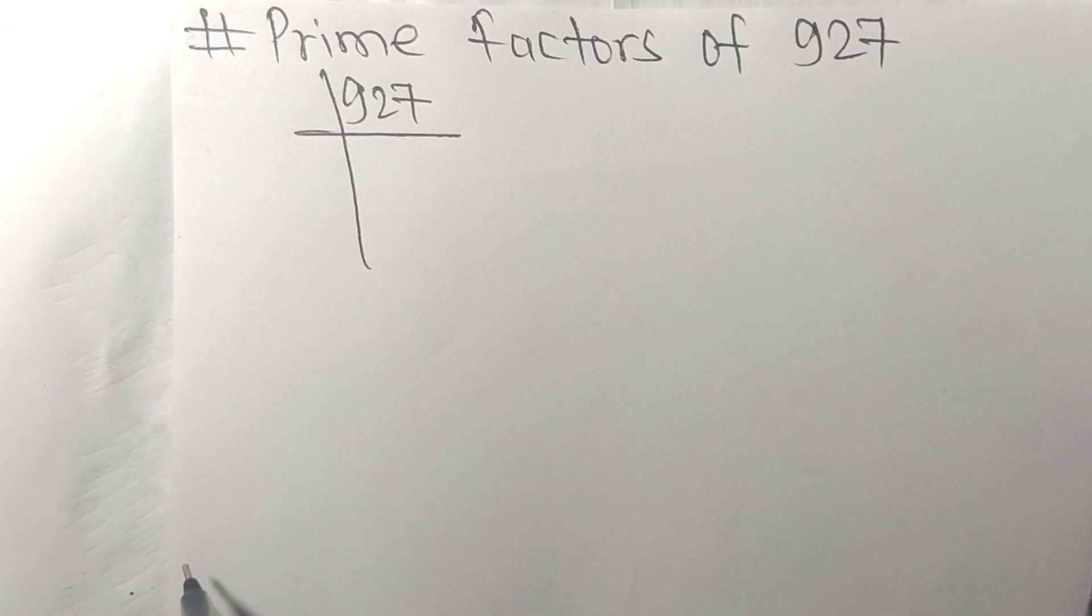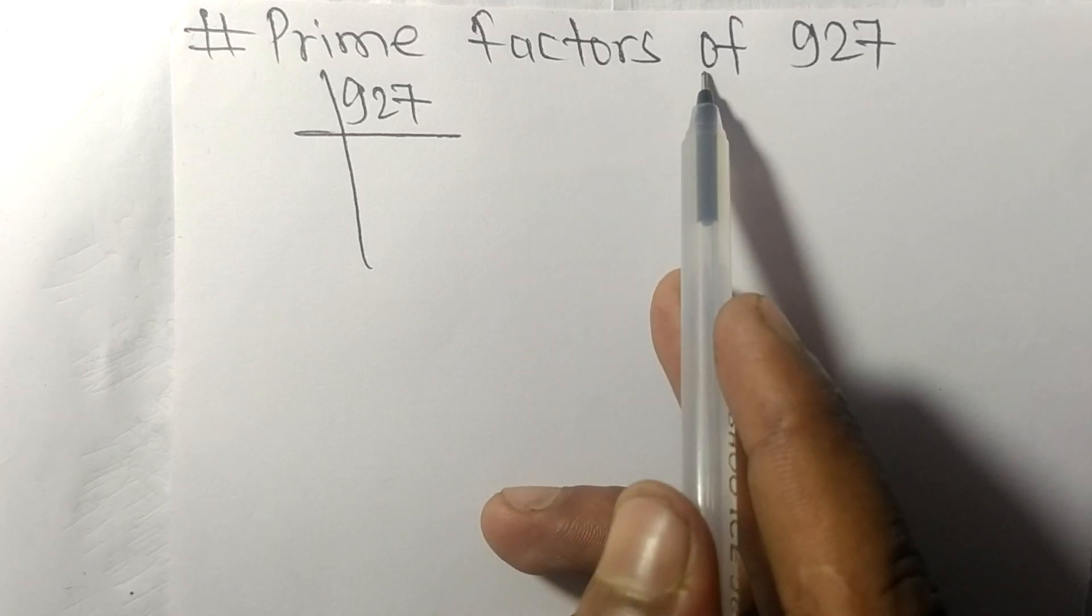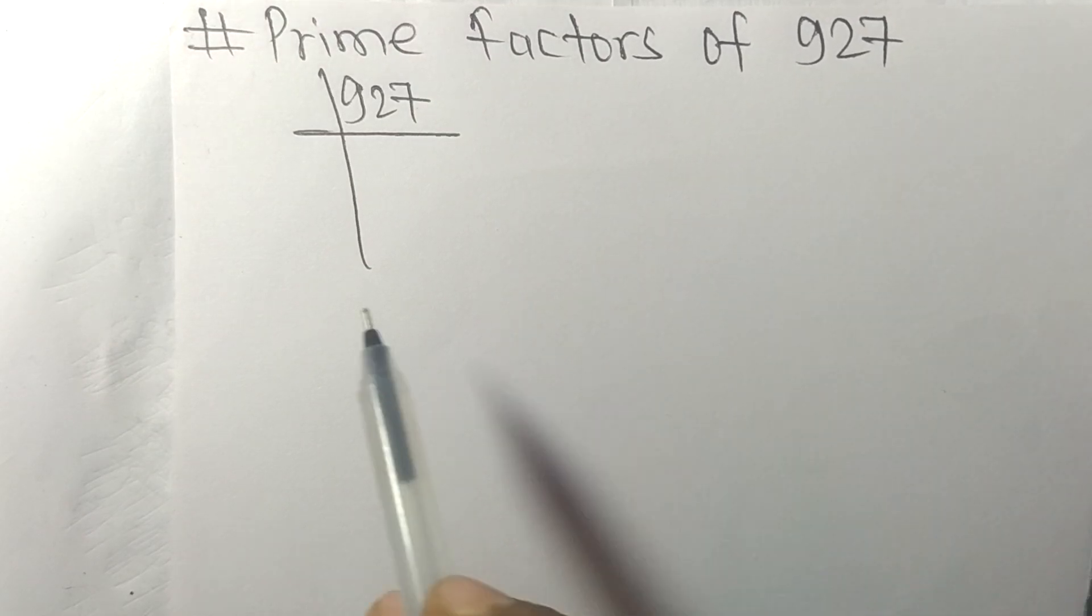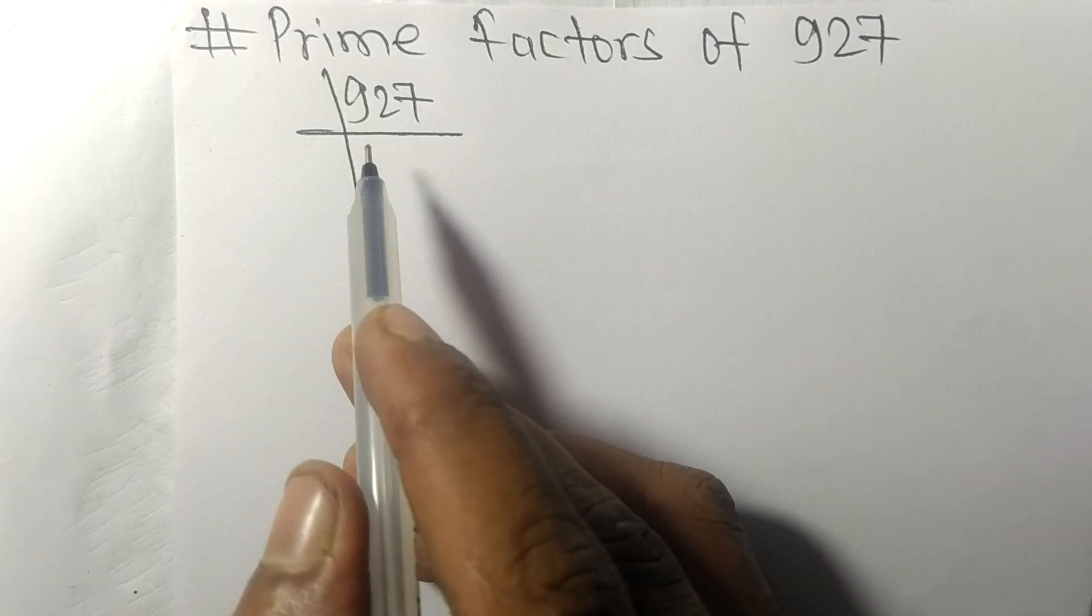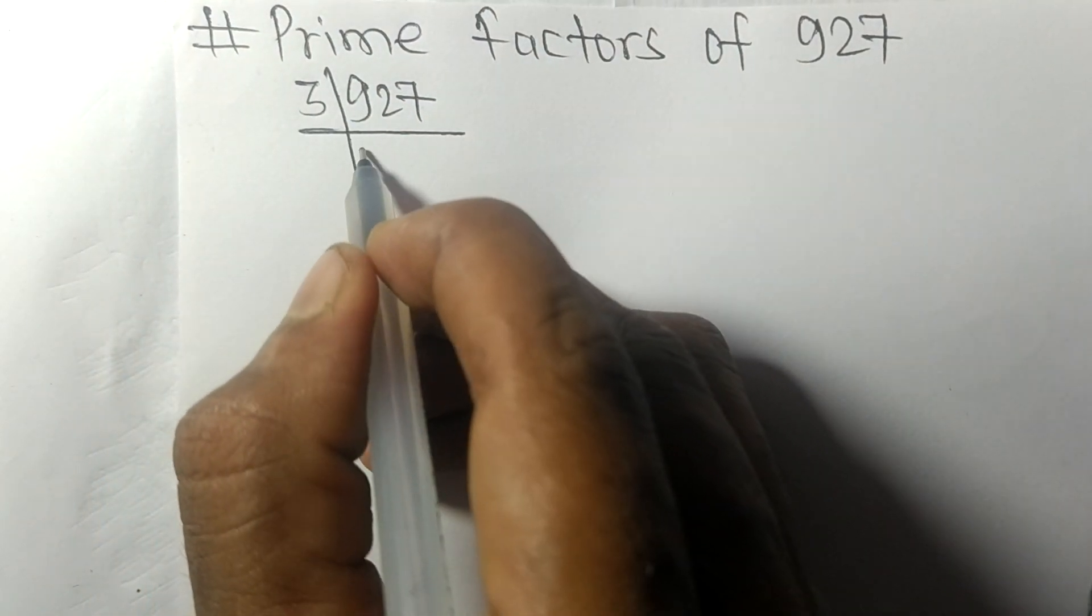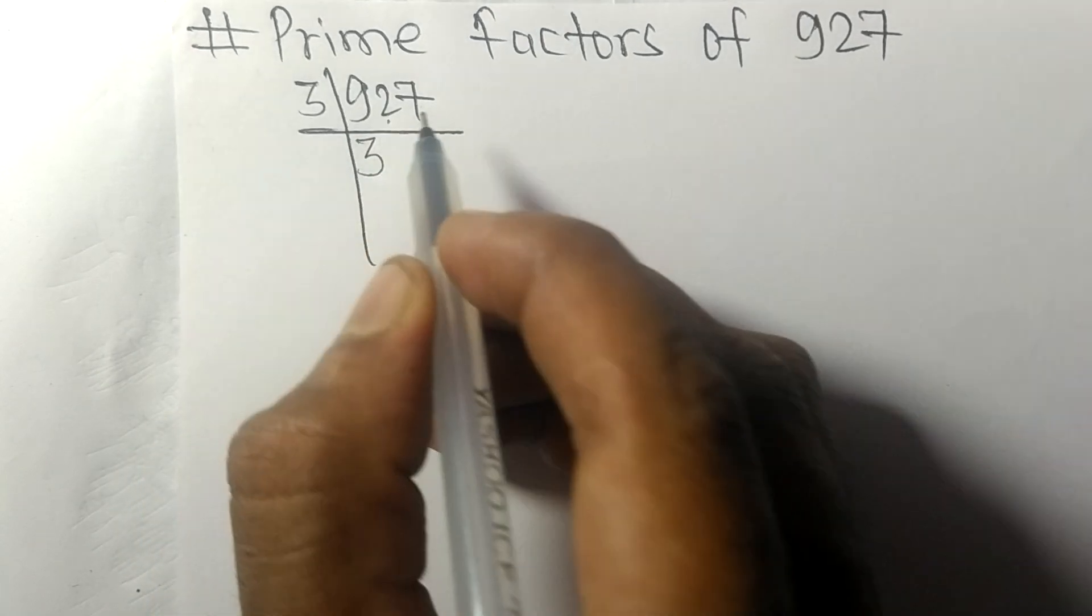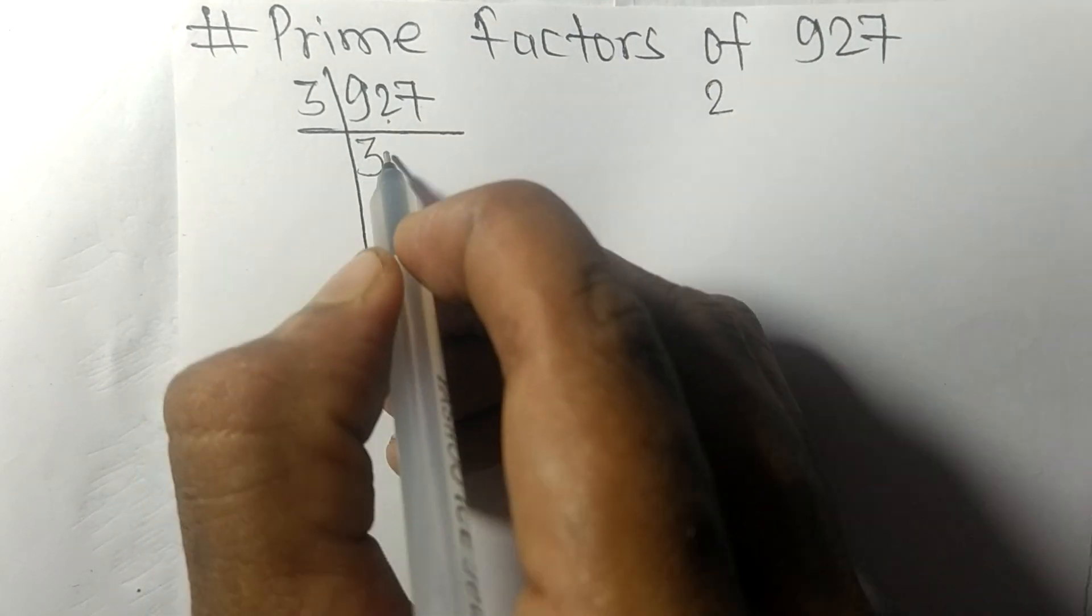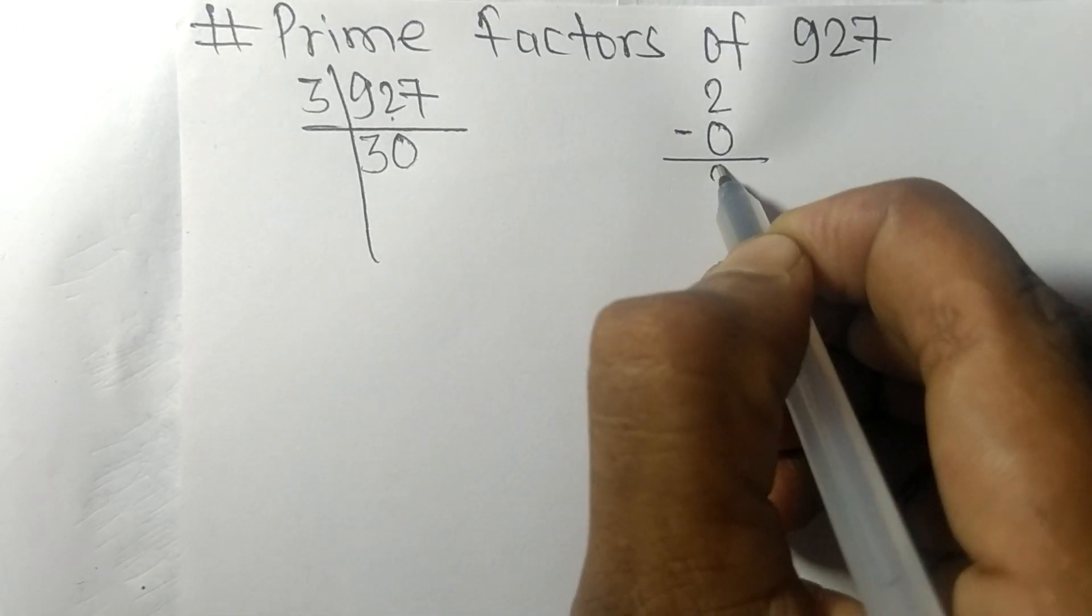Today in this video we shall learn to find the prime factors of 927. 927 is exactly divisible by 3. 3 times 3 means 9. Now we have 2, 3 times 0 means 0, and on subtracting we get